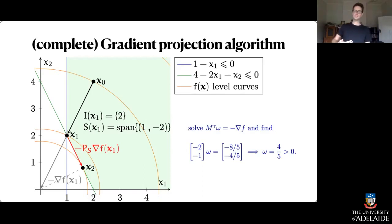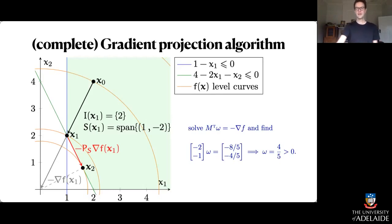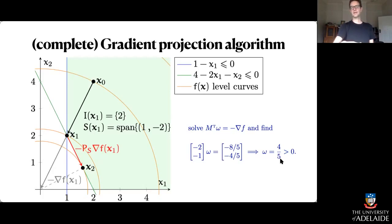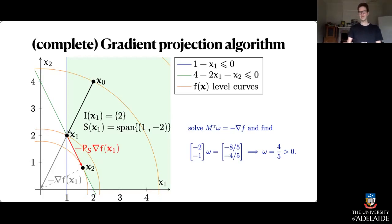We need to form M^T Omega again with my new M, set that equal to the negative gradient of F at x2. Because M was (-2, -1), and the negative gradient of F evaluated at x2 is pointing back towards the origin — negative 8/5, negative 4/5 — if you solve that equation you get Omega equals 4/5, and that's positive. That's what tells me I'm at the true minimizer, the overall minimizer for this problem. I can't step any further, so we're done.